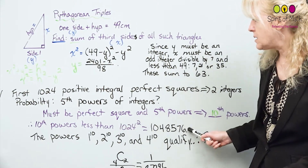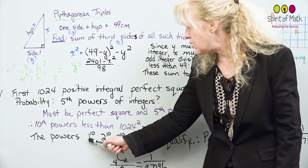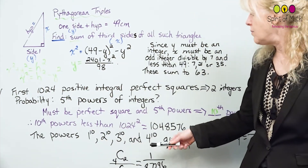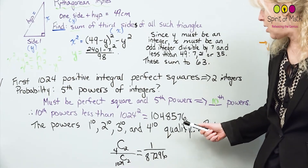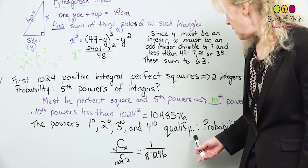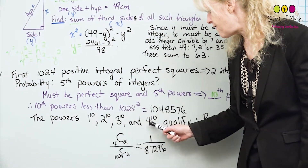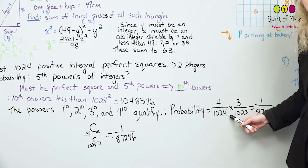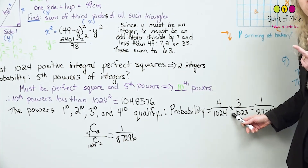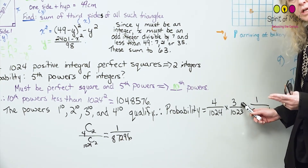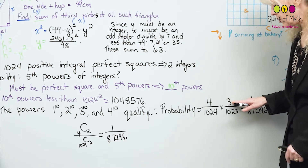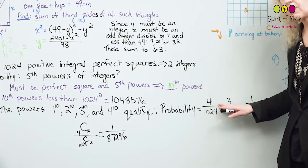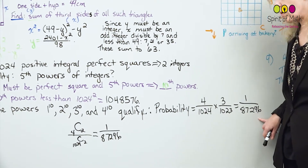List out the tenth powers less than 1,048,576: 1¹⁰, 2¹⁰, 3¹⁰, and 4¹⁰. Going higher than 4¹⁰ exceeds that number, so these four all qualify. The probability is 4 out of 1024 for the first choice. For the second integer, it can't be the same as the first, so you have only 3 choices out of 1023 remaining numbers. Multiplying those fractions gives you the answer.